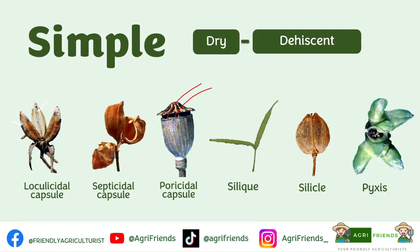Siliqua and silicle are two special capsules found in the mustard family. Both develop from two carpels, but a siliqua is long and slender while a silicle is short and broad. In siliqua, there is a false septum called the replum, resulting in a fruit with two locules. Pyxis is a capsule which has a circumscised dehiscence — a circumscised capsule has a lid that comes off from the base of the fruit. An example of this is the purslane.